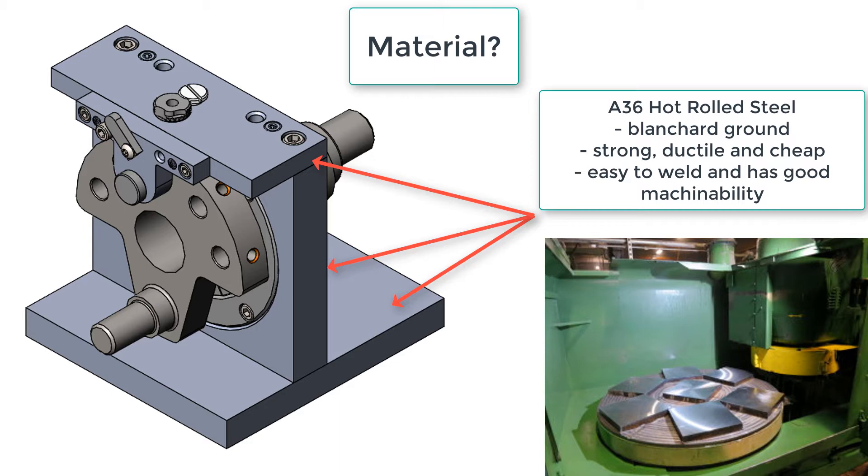One of the more commonly used mild steels is A36 hot rolled steel. Often purchased as Blanchard ground, it's strong, ductile and cheap. It's easy to weld and has good machinability.